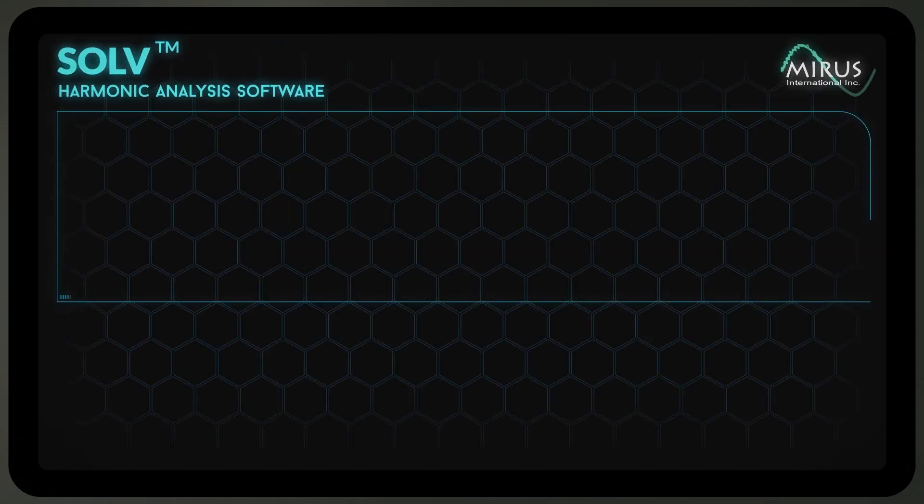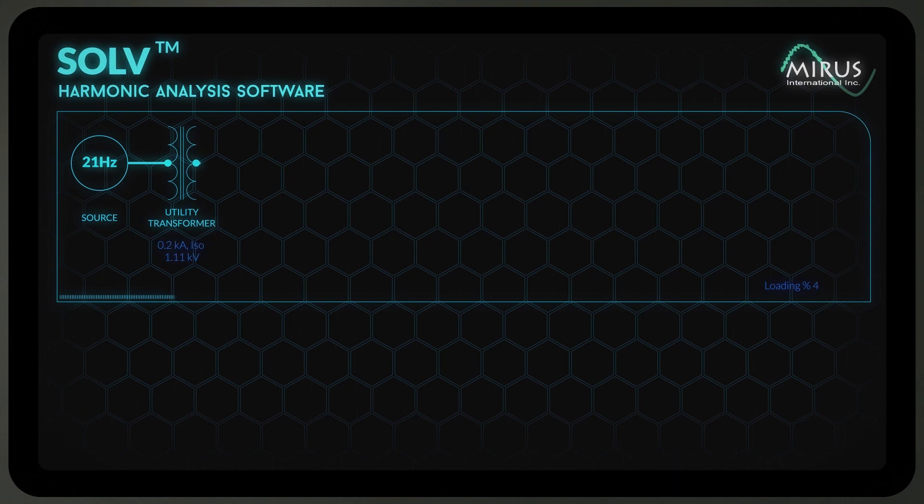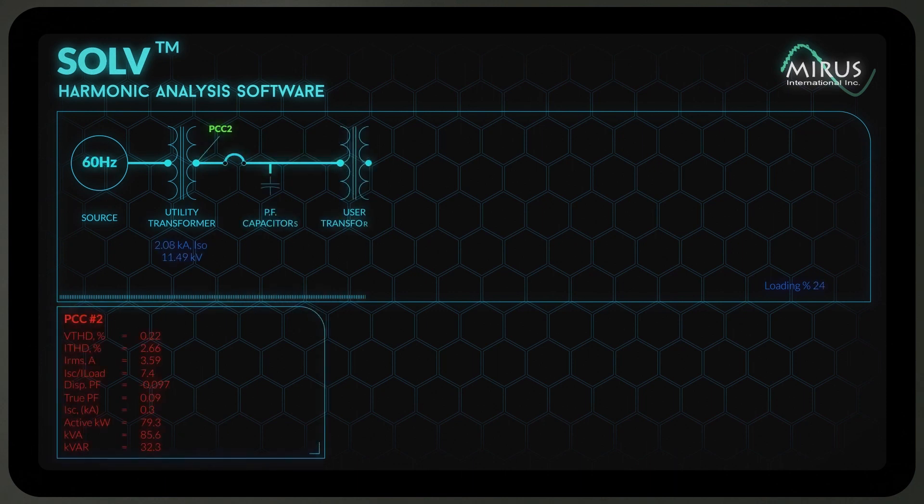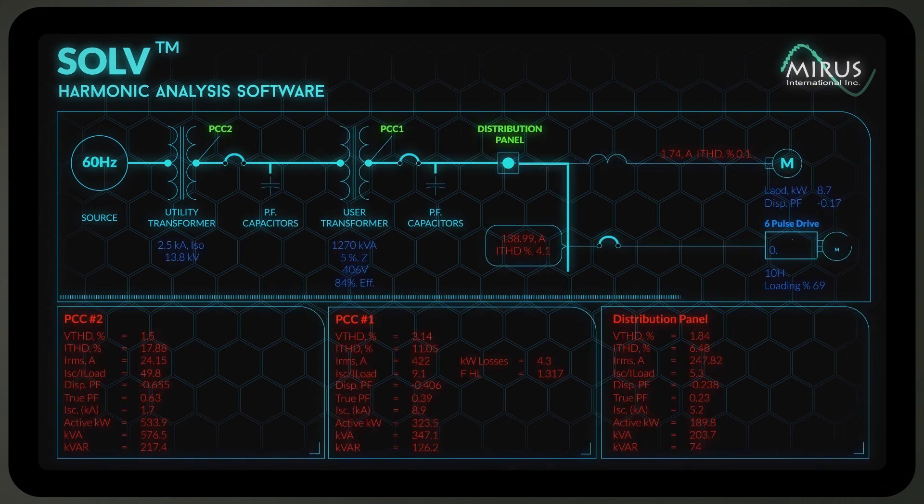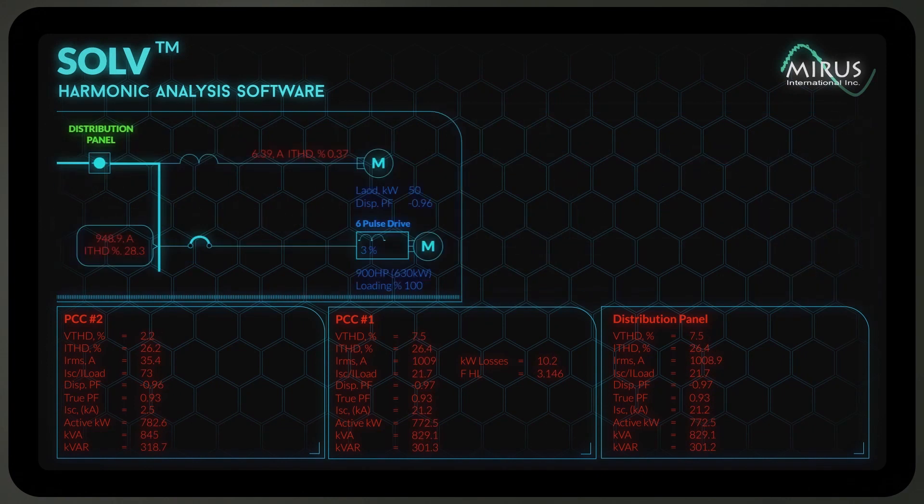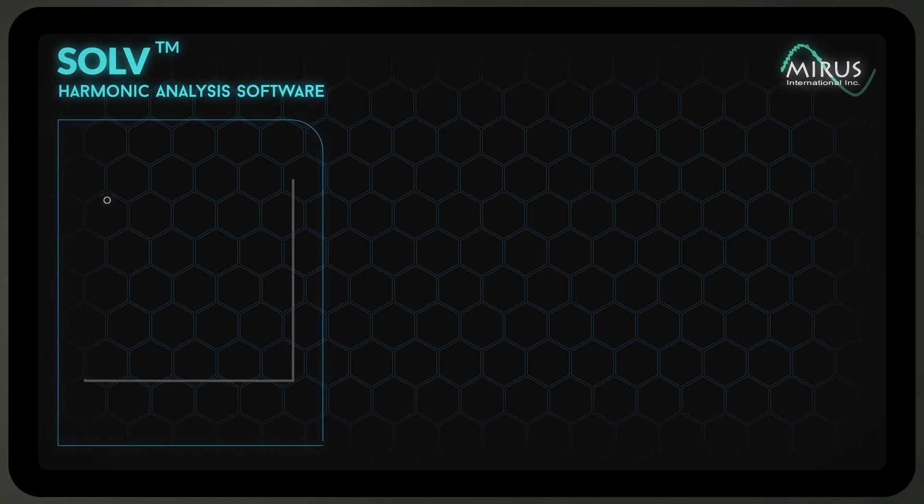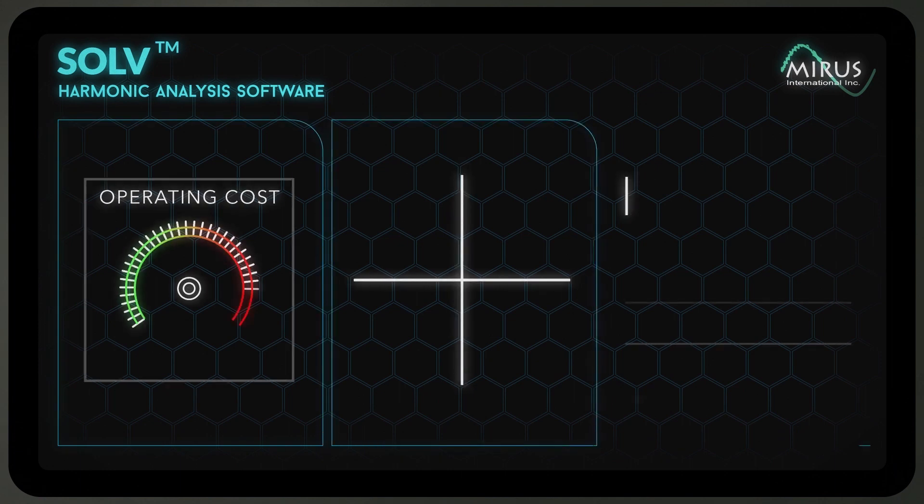First, there is SOLVE, a diagnostic simulation software tool. Watch it calculate current and distortion levels to identify harmonic problems before they occur. It also performs an energy analysis that shows you how MERIS's approach to harmonic mitigation can save on energy.